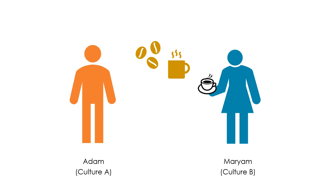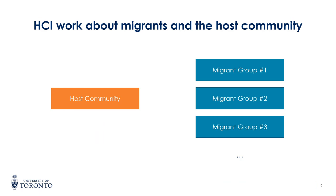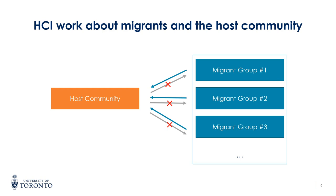This is a normal scenario that happens frequently between someone from a dominant group, like the host community, and another from a minority group, like a migrant. HCI research about engaging migrants with the host community usually focuses on one-way communication — helping the migrants comprehend the local culture, but not the other way around as well. Also, HCI research often places all migrants in a single group and lacks the necessary examination of cultural communication between migrants of different backgrounds.